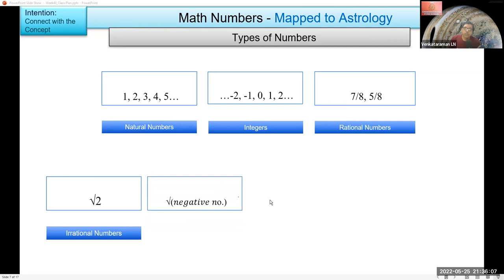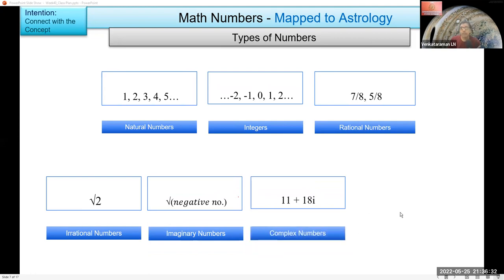Next is a square root of a negative number. Imaginary, yes. Imaginary numbers. Then we have a combination of real and imaginary. What are these? Complex, yes. Complex numbers. Can you guess what could be the seventh one?